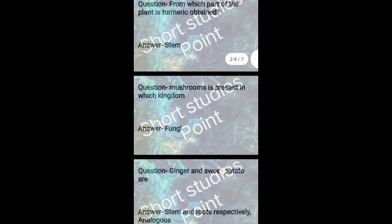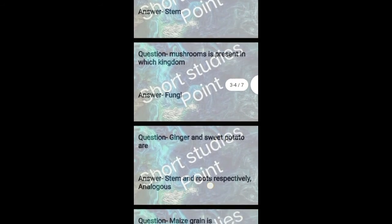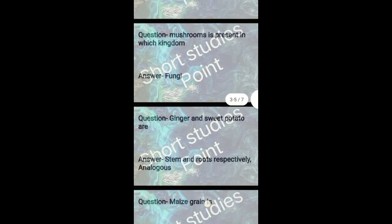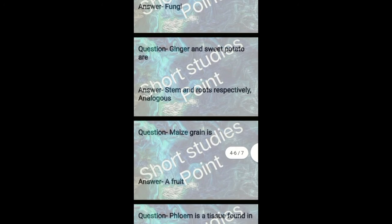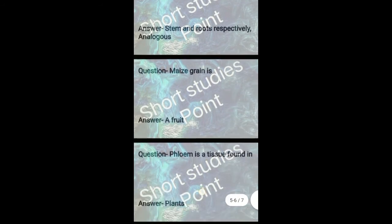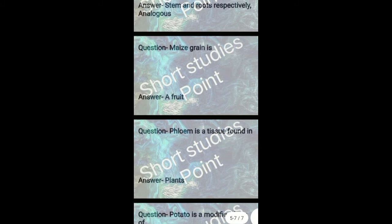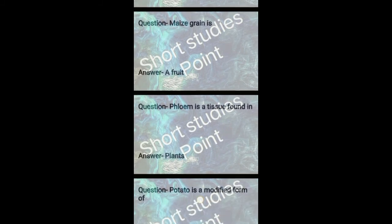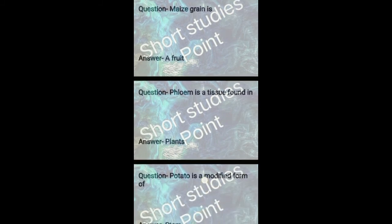Question: Ginger and sweet potatoes are? Answer: Stem and roots respectively. Next question: Maize grain is? Answer: A fruit. Next question: Phloem is a tissue found in? Answer: Plants.